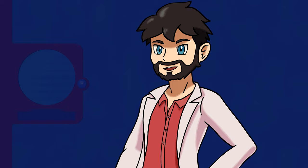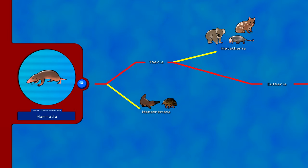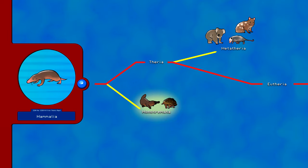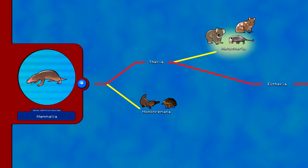Here we are at the home stretch — no more worms, no more fish, no more mammal-like reptiles. At 220 million years ago, we have reached Mammalia, the class of mammary gland-having animals, which branched 160 million years ago to separate the Therians from the Monotremes, which became platypuses and echidnas. Therians split into Eutherians and Metatherians — the marsupial relatives — 125 million years ago. Marsupials include animals like kangaroos, possums, bandicoots, and Tasmanian devils.